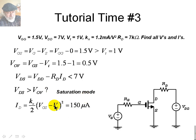Well, if it's in saturation mode, the current in the drain is given by this expression. The conductance coefficient, divided by 2, multiplied by VGS minus VT, the overdrive voltage, squared. Well, you replace VGS, that is 1.5 volts, VT, that is 1 volt, KN, that is 1.2 milliamps per volt square, and you get the current in the drain, is 150 microamps.